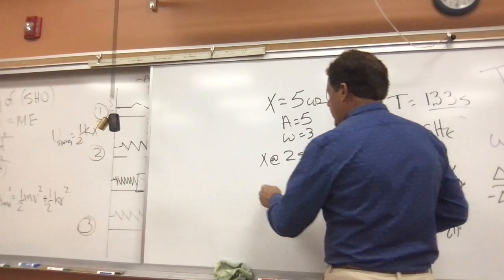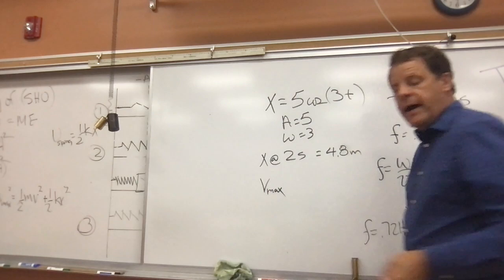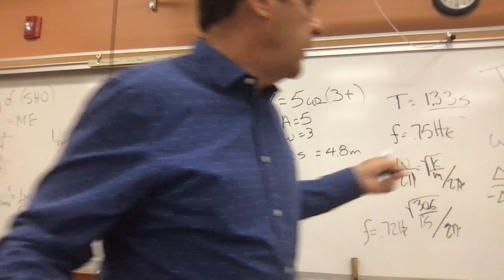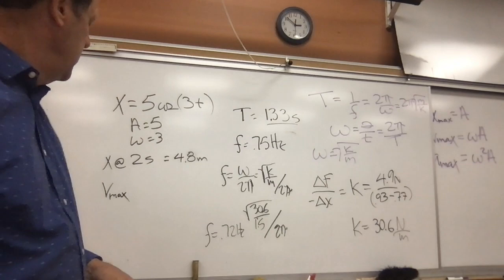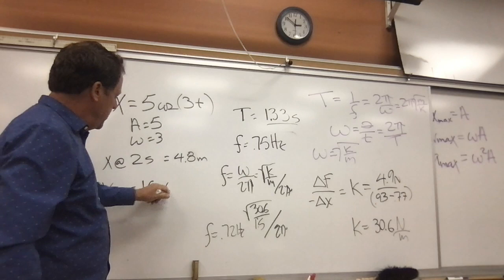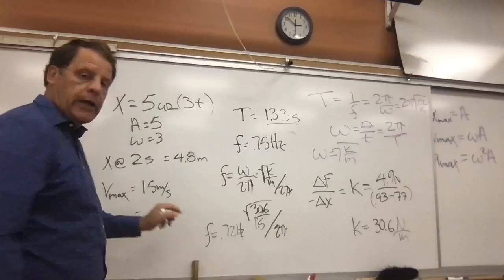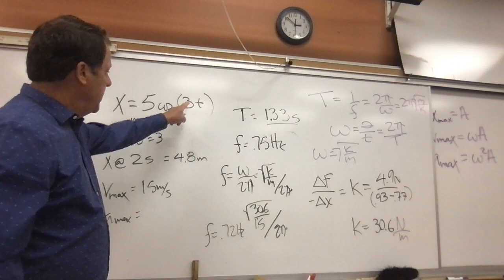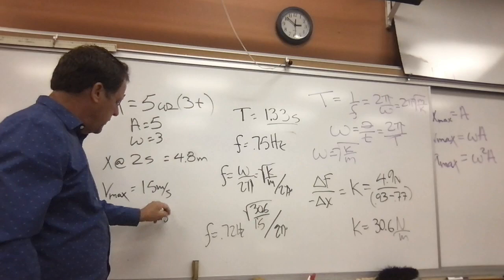What would our maximum velocity be? We go back to our maximum velocity, which would be omega times A. So omega A would be 3 times 5 = 15 meters per second. What would be our a max? Our a max would be omega squared times A, which would be 3 squared — 9 times 5 — which would be 45 meters per second squared.